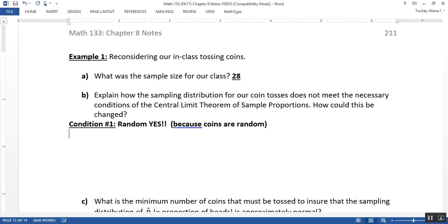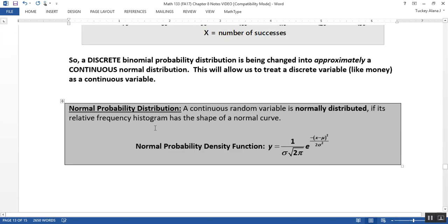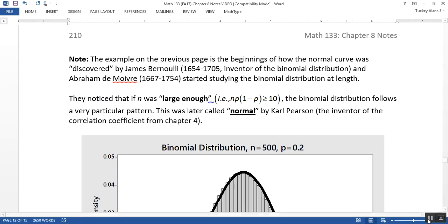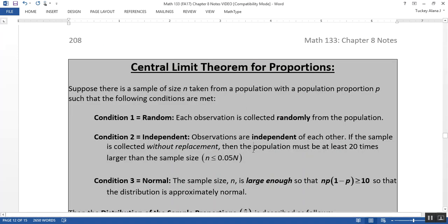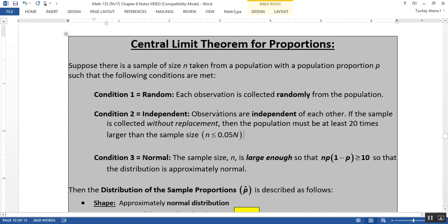Condition number two is the independence part. Now, you might be thinking, oh, do I have to worry about 0.05 and capital N and all of that stuff? Sorry, let me go back to the central limit theorem. So if you look at condition number two, it talks about the observations are independent of each other. You only have to worry about this whole second phrase right here if it's without replacement.